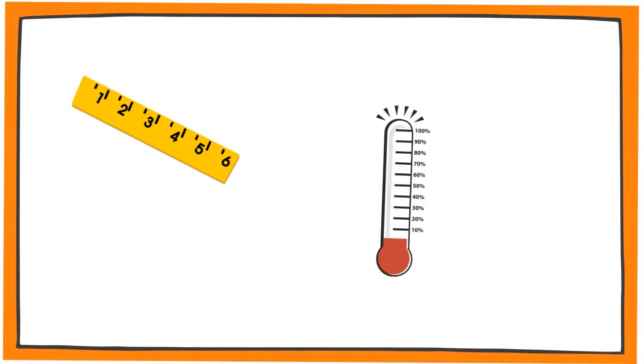Today you will learn how to make a number line. A ruler is an example of a number line. A thermometer is also an example of a number line.